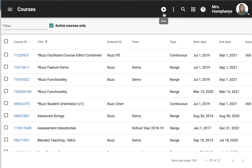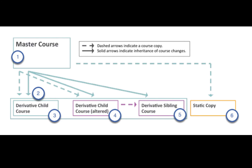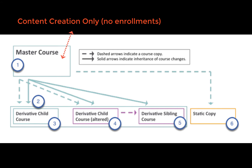If we want to create a new course, it's important to think about the hierarchy of courses. Buzz has what's called a master-derivative concept. Master courses allow you to manage the content for multiple courses in one central location. This diagram illustrates basic relationships between a master course and various types of copies you can create. The master course should be used for content creation and management and shouldn't be used as live courses.